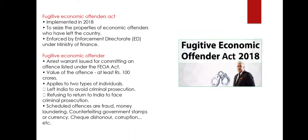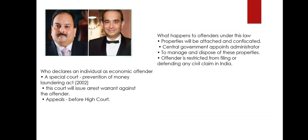The scheduled offences listed under this Act include fraud, money laundering, counterfeiting, government currency counterfeiting, cheque dishonor, corruption, etc. For example, Nirav Modi, a diamond merchant accused of defrauding Punjab National Bank of over Rs. 13,000 crore, fled India in 2018 and was declared a Fugitive Economic Offender in 2019. Other examples include diamond merchant Mehul Choksi, former IPL chairman Lalit Modi, also listed as economic offenders under this Act.